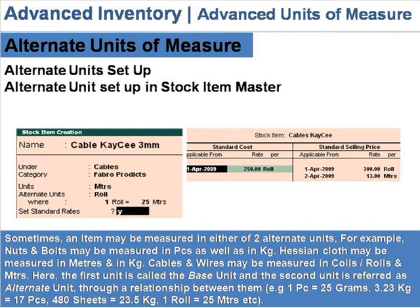Alternate units of measure: sometimes an item may be measured in either of two alternate units. For example, nuts and bolts may be measured in pieces as well as in kg. Cloth may be measured in meters and in kg.